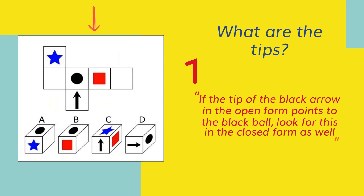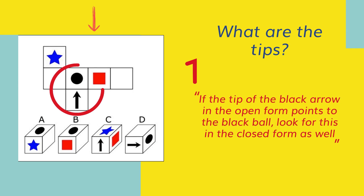If the tip of the black arrow in the open form points to the black ball, look for this in the closed form as well.